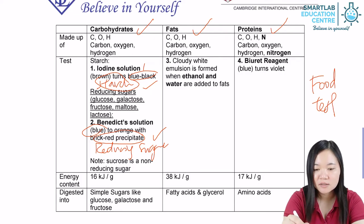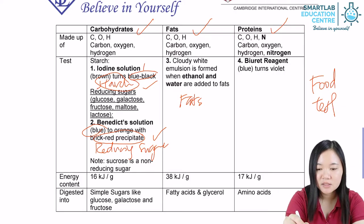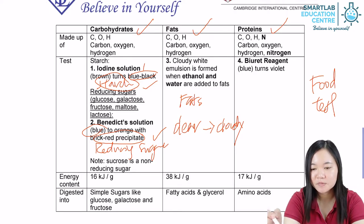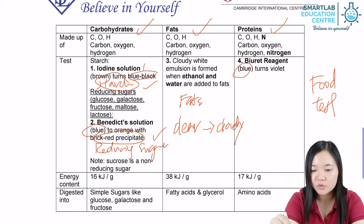For fats, if fat is present, the clear solution will turn cloudy. If fat is absent, it will remain clear. For protein, the solution will turn from blue to violet if protein is present.